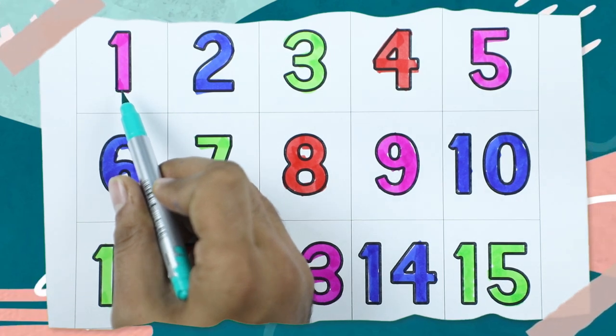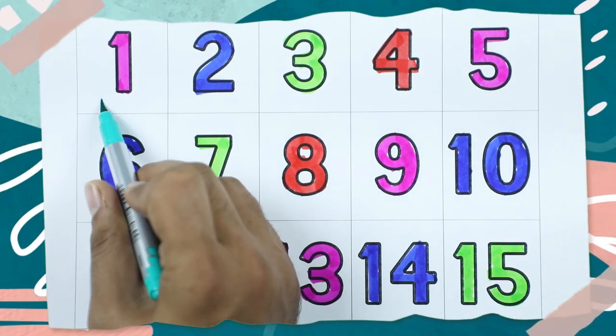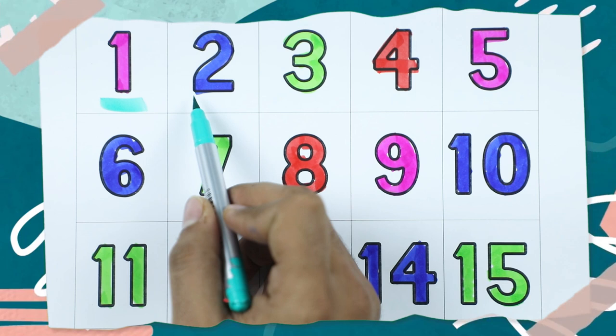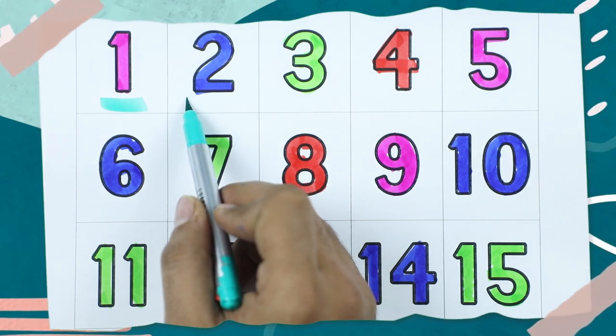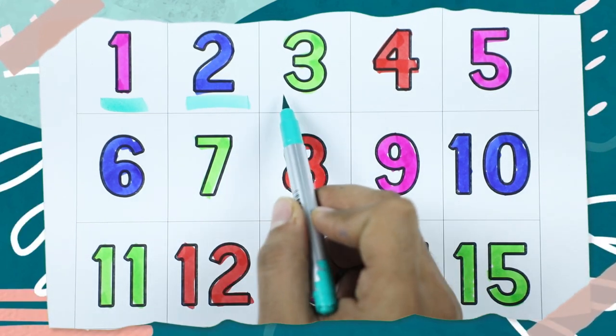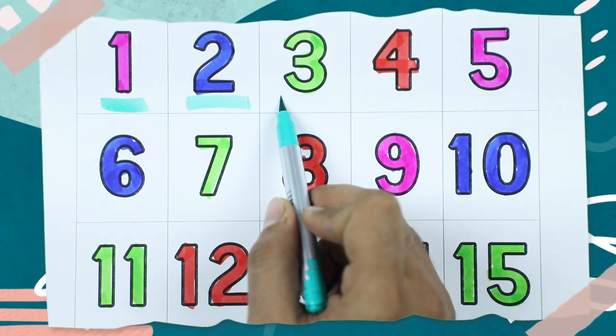Which number? Tell me. Yes, it's one with pink color. Number two, which color? Number two, blue color. Number three with green color.